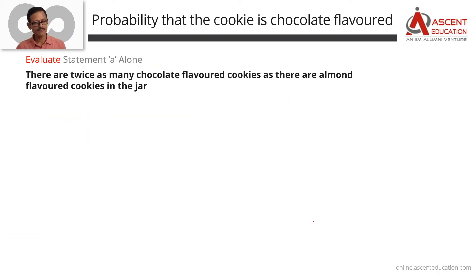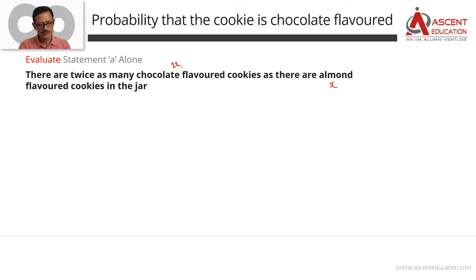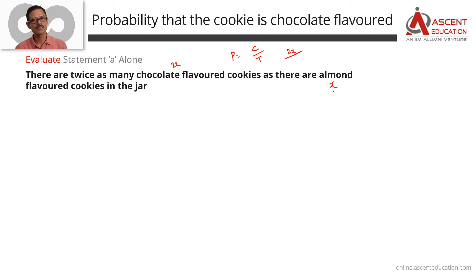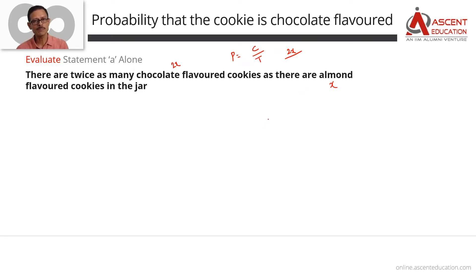Let's start with Statement A: There are twice as many chocolate-flavored cookies as there are almond-flavored cookies in the jar. For example, let X be the number of almond-flavored cookies, so chocolate-flavored cookies are 2X. The temptation is to say the total number of cookies is 2X chocolate plus X almond equals 3X. But there could also be strawberry-flavored, vanilla-flavored, mango-flavored cookies — it can have more than two types of cookies.